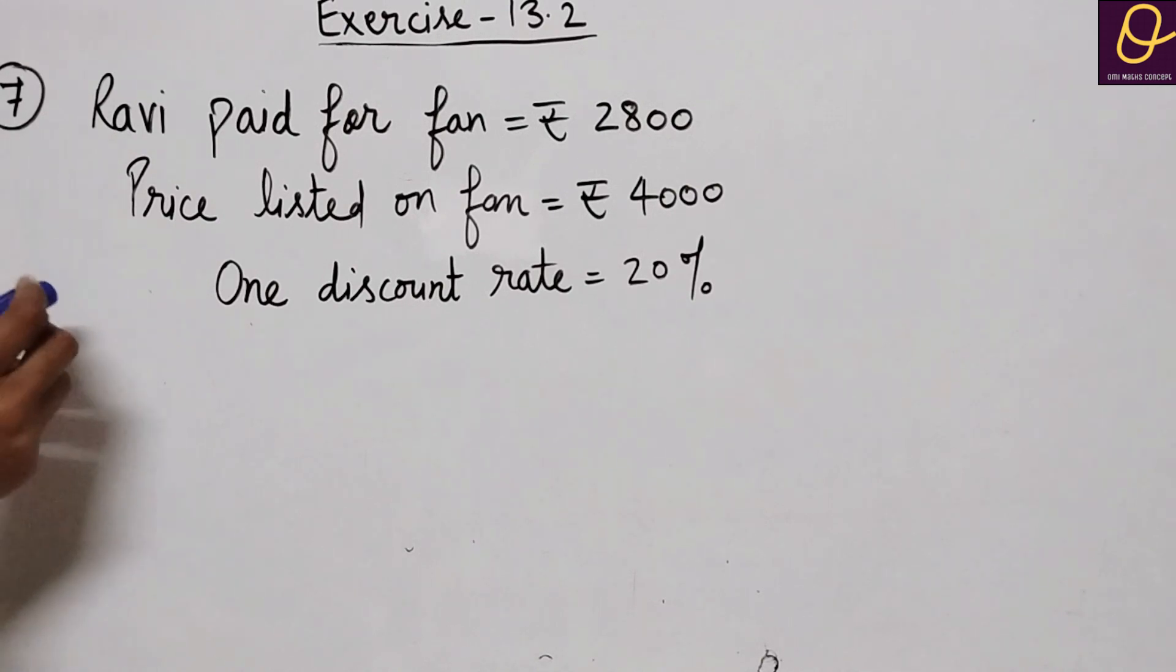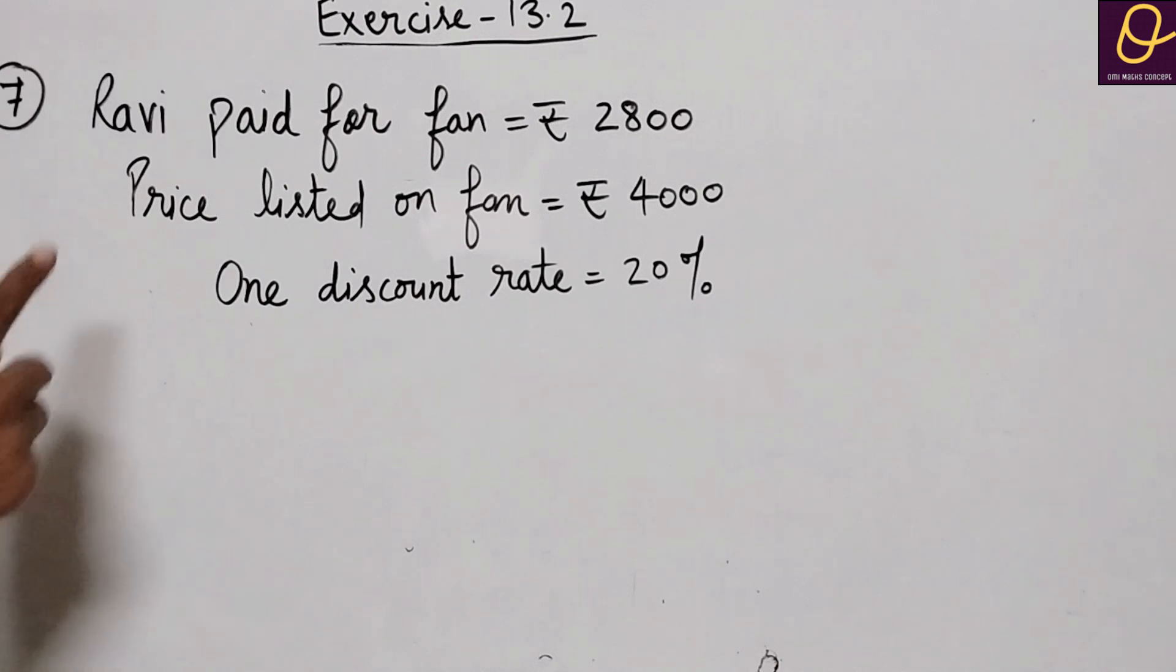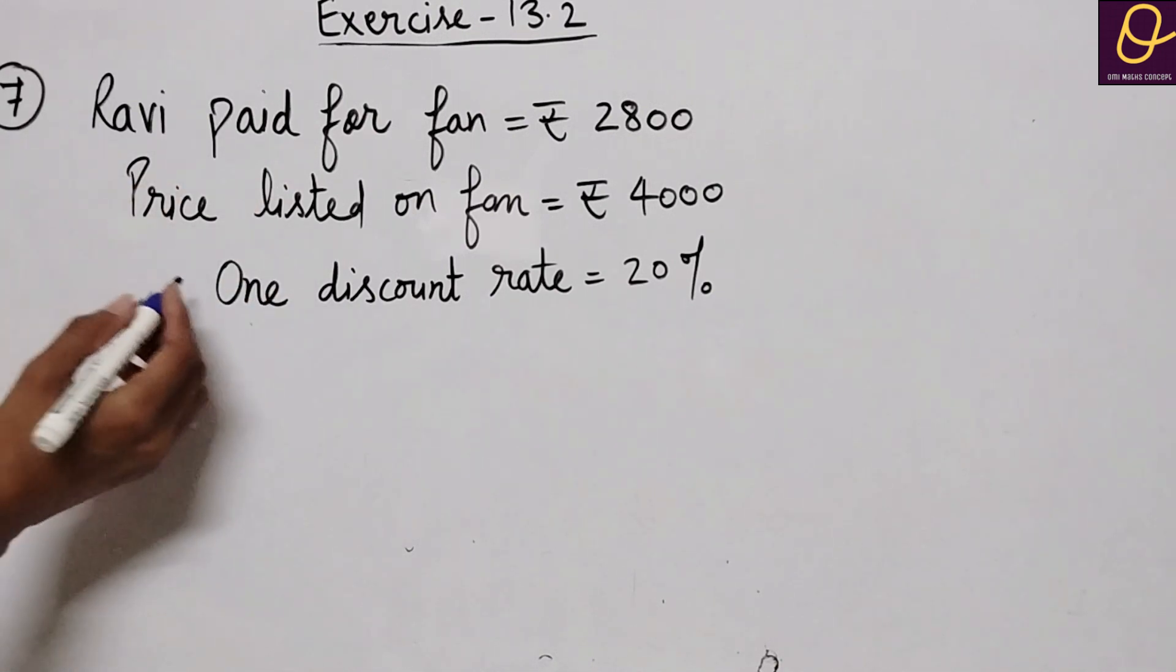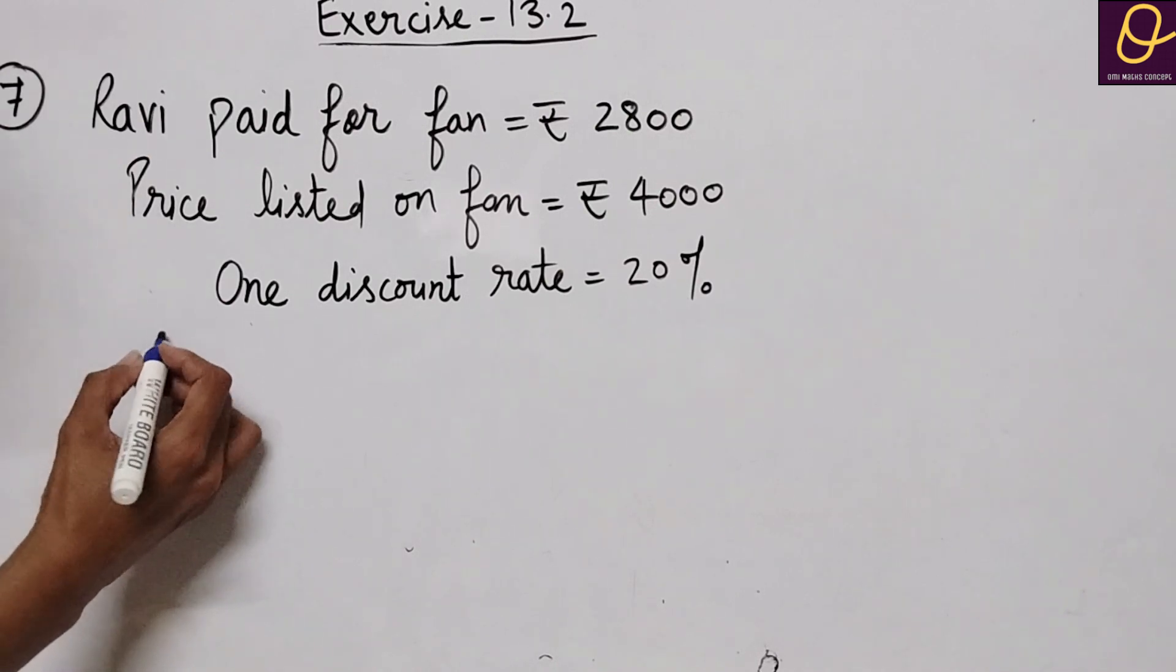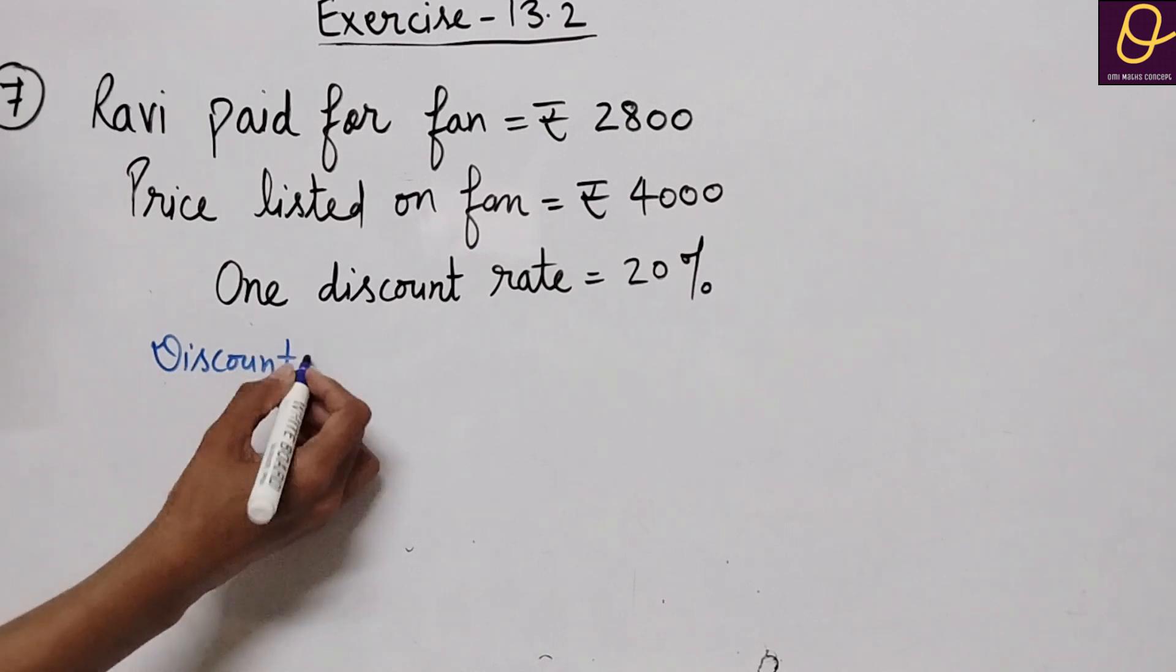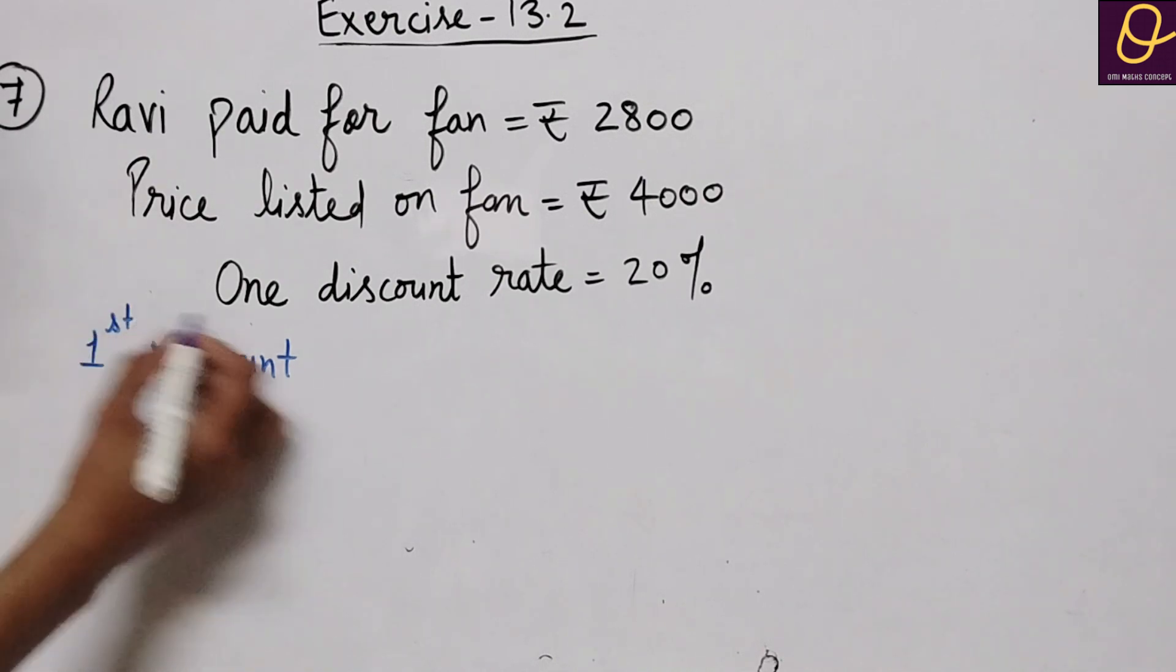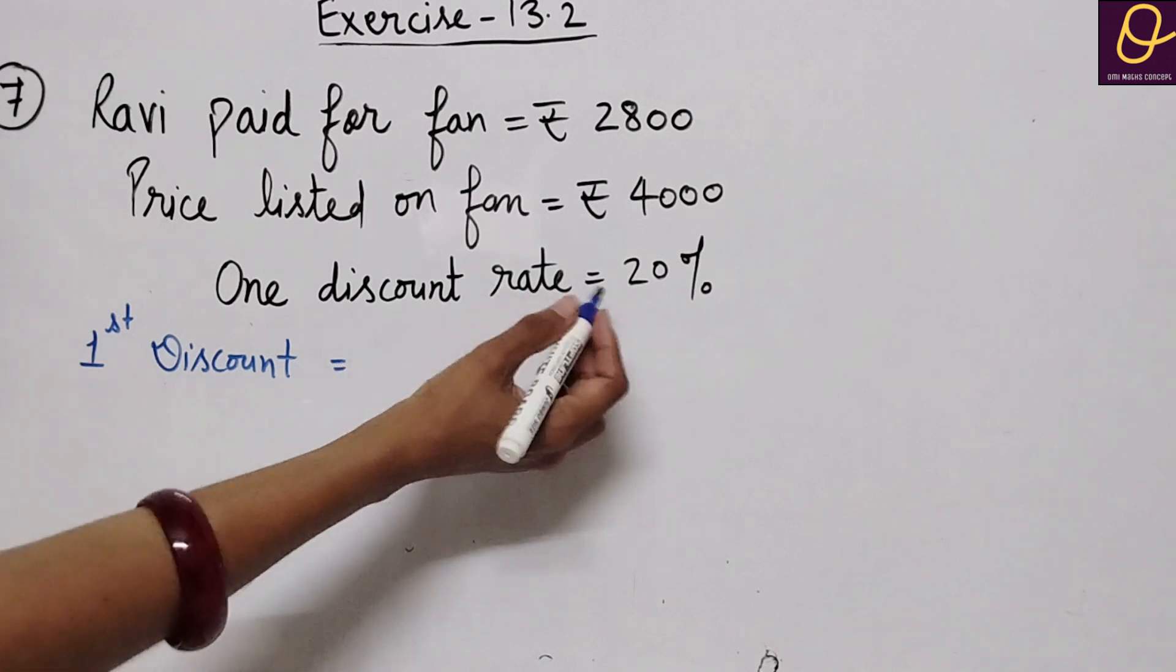So first we will find the first discount. The first discount is equal to 20 percent of the MRP. You can do the formula as well.